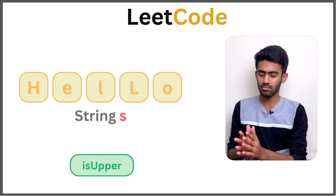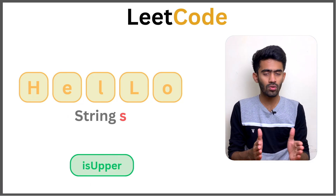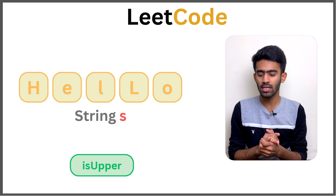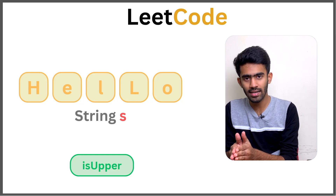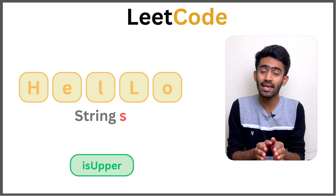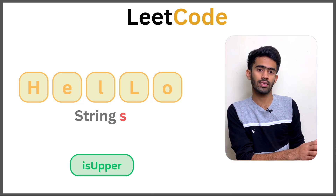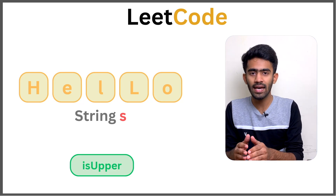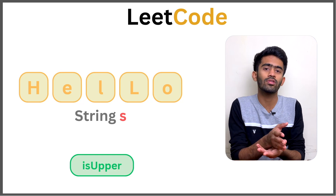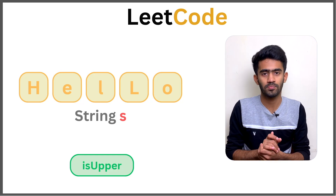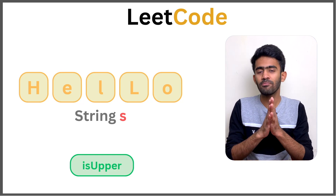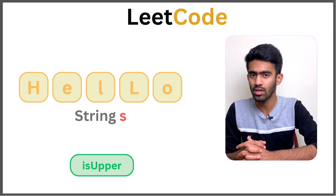So, we have to traverse the string one letter at a time. If a letter is uppercase, convert it to lowercase. If it's not uppercase, just move on to the next letter. Now, let's look at the code.